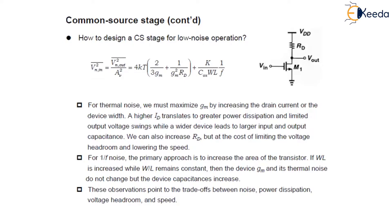For thermal noise, we must maximize GM — we have seen this already in previous slides — by increasing the drain current or the device width. As you have seen this equation before, if we increase and maximize GM, the input-referred noise voltage decreases. And it is only possible if we increase the drain current or device width.